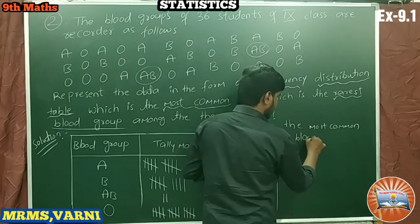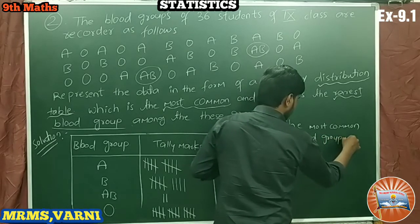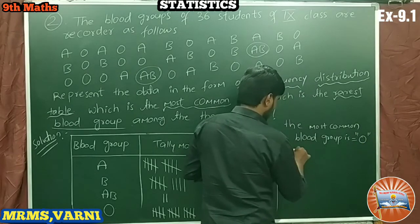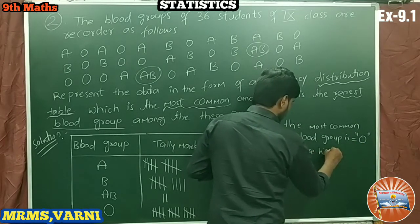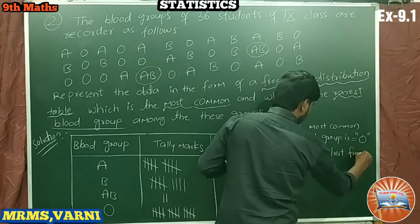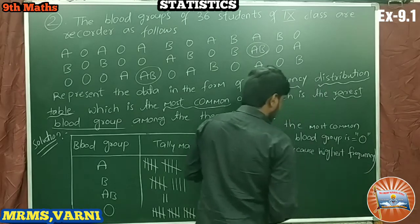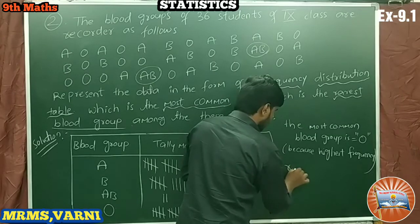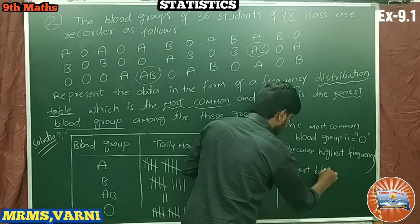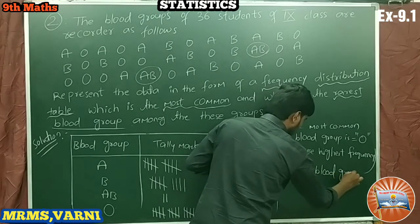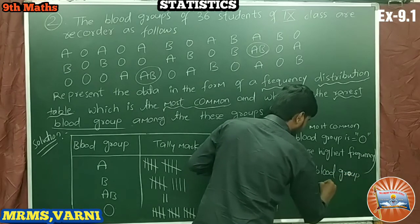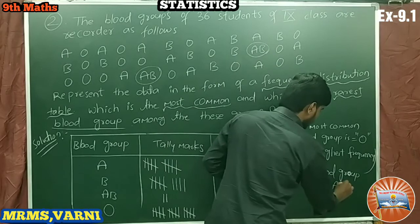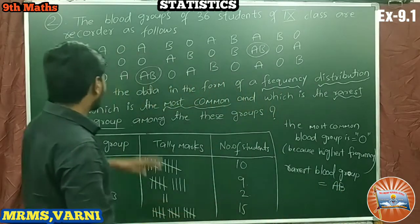So the most common blood group is O, because it has the highest frequency. The rarest blood group is AB. This is the solution for problem number 2 in exercise 9.1.